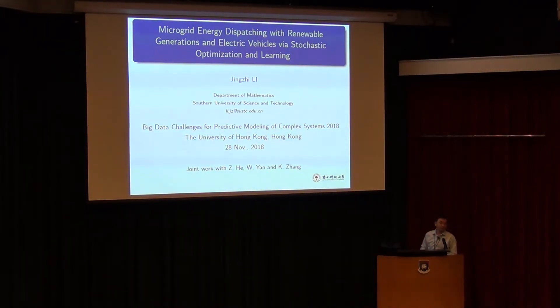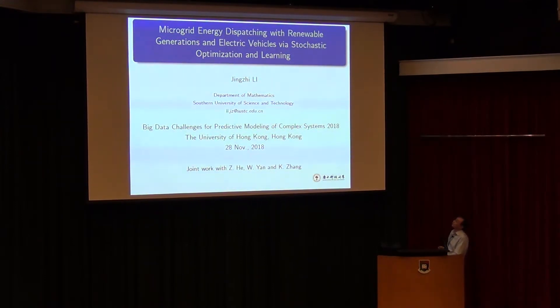I'd like to thank the organizer to invite me to give a talk here. Today I'm going to talk about microgrid energy dispatching with renewable generation of electric vehicles via stochastic optimization learning. This is joint work with my colleagues from the Energy Engineering Department, Zhu Binghe and Wei Feng Yan, and a math professor from Jilin University.